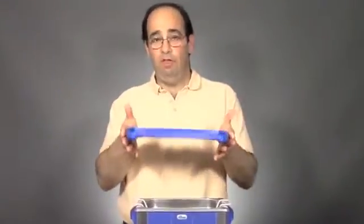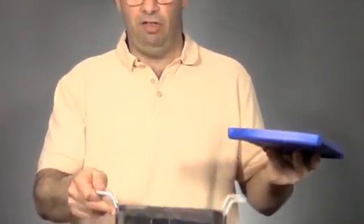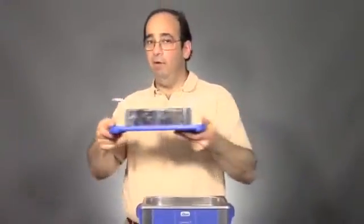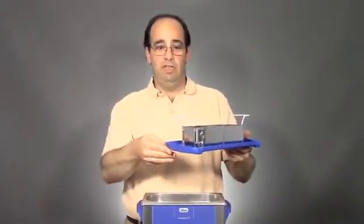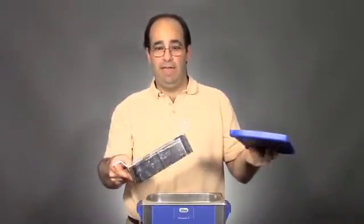It also functions as a drip tray, so you can take the basket out of the heated solution, put it on the lid, and carry it around. The liquid drips into the lid, and then when you're ready, you just pour the liquid back into the tank.